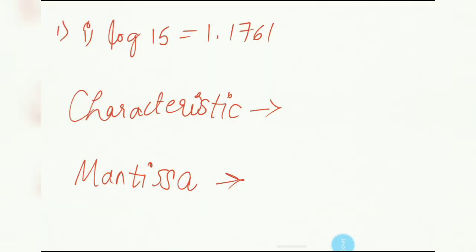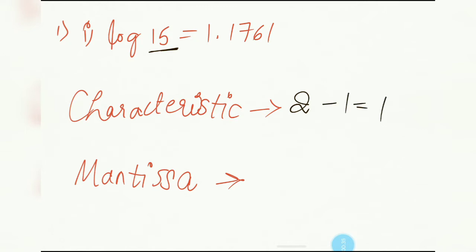So, the first question — we have to find out the characteristic and mantissa. The first question is: log 15 is equal to 1.1761. So how to find out the characteristic: here, how many digits are there? There are two digits, and what you have to do is just minus 1. So the characteristic is 1.